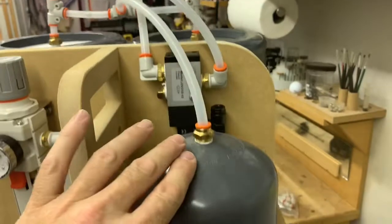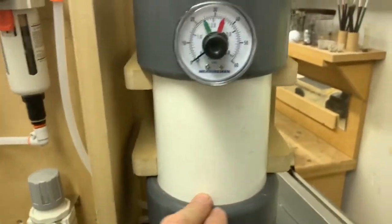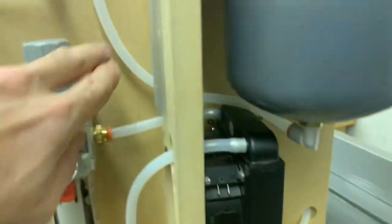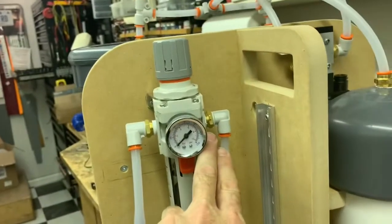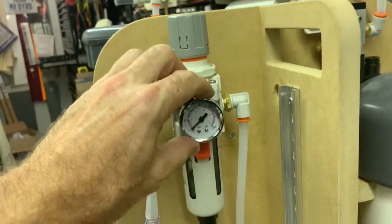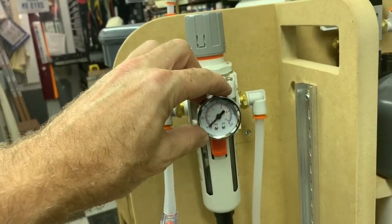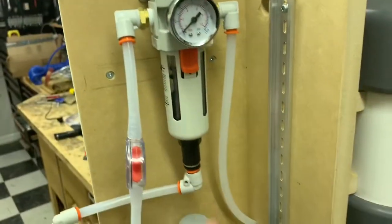Then we come back out to our surge tank which stores the air and then we go out back into a regulator. Again this regulator is a particulate filter as well as a moisture filter and so that will automatically eject any moisture here.